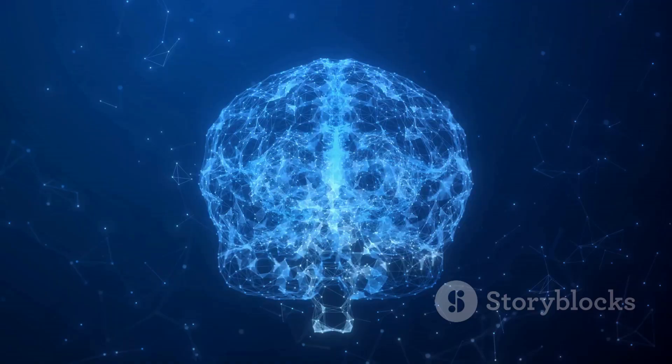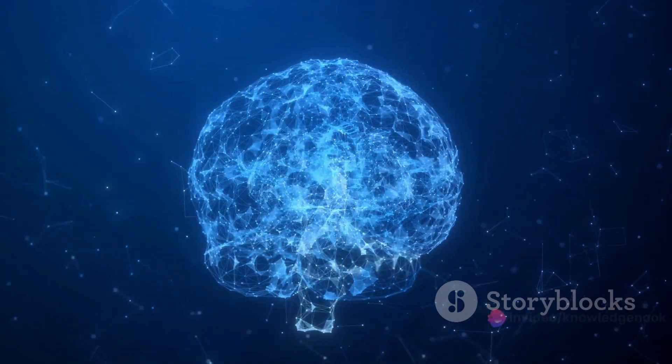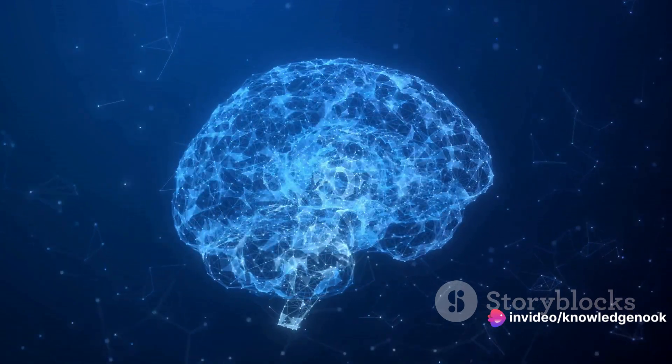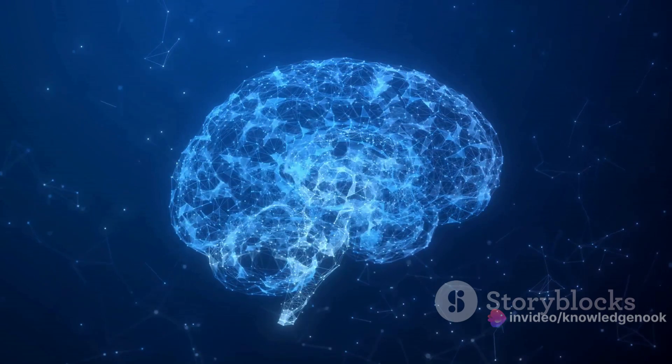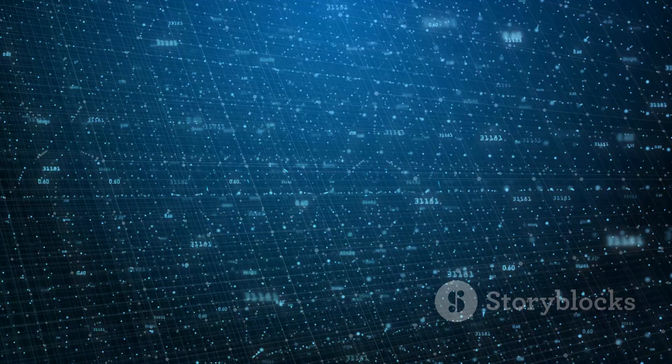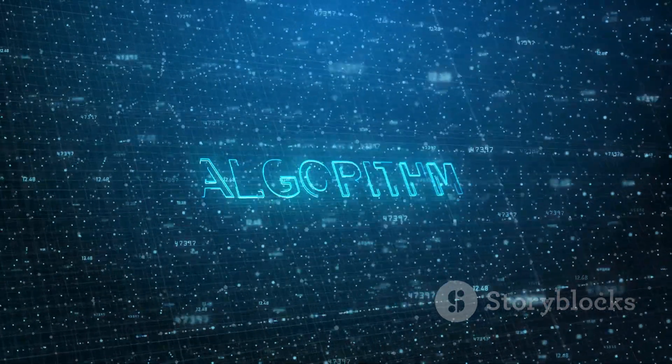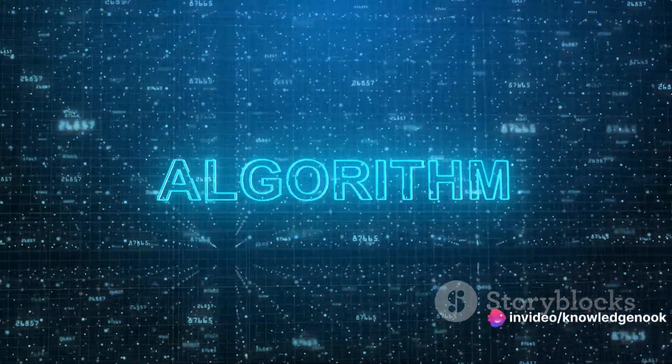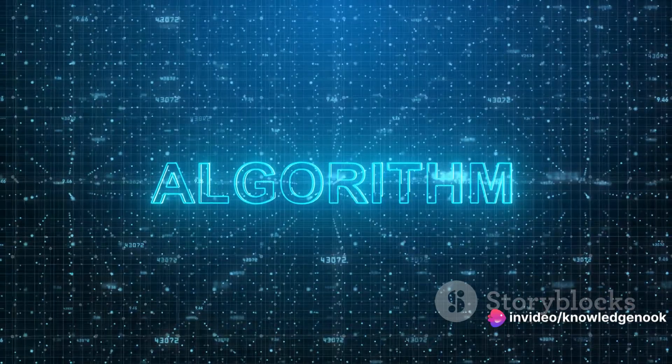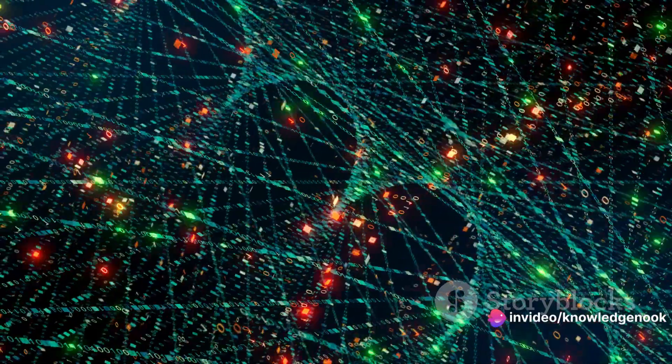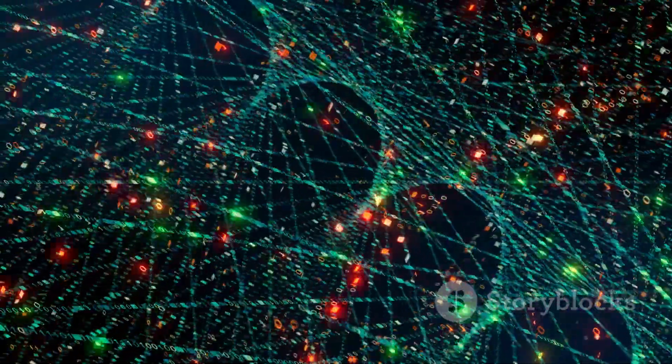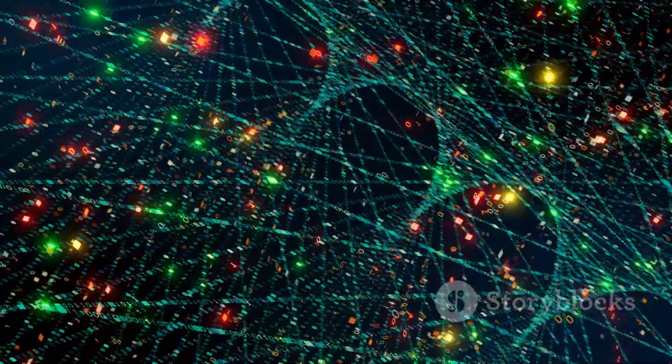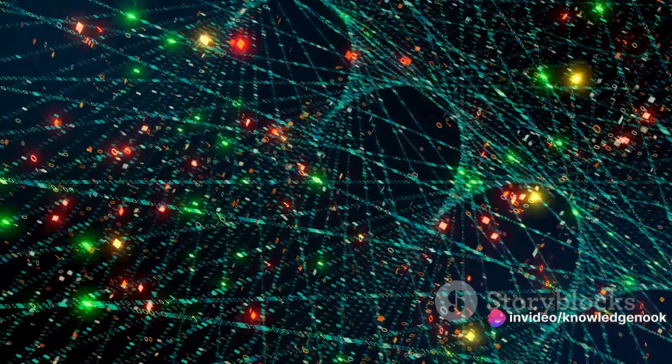This data could be anything from images, text, numbers, or even sound. The more diverse and comprehensive the data, the more enriched the learning experience for the AI. But how does the machine make sense of all this data? This is where algorithms come into play. Algorithms are a set of rules or instructions that the machine follows to identify patterns, extract meaningful insights, and make predictions. They act as the teacher, guiding the AI system in its learning process.